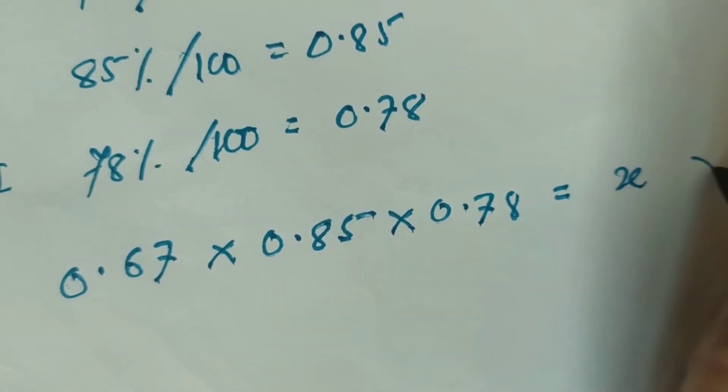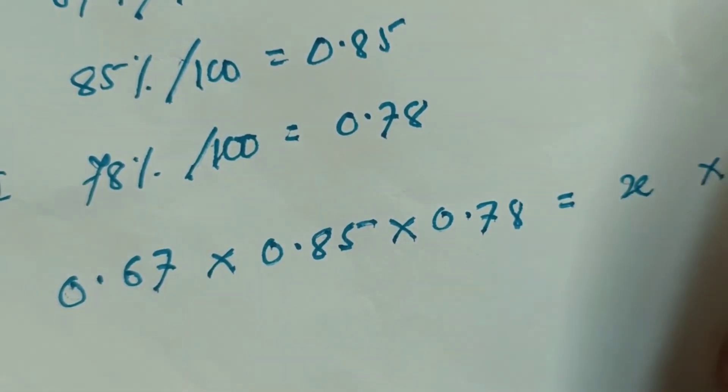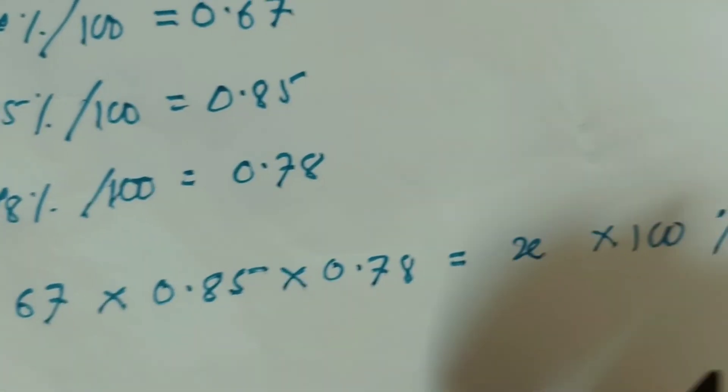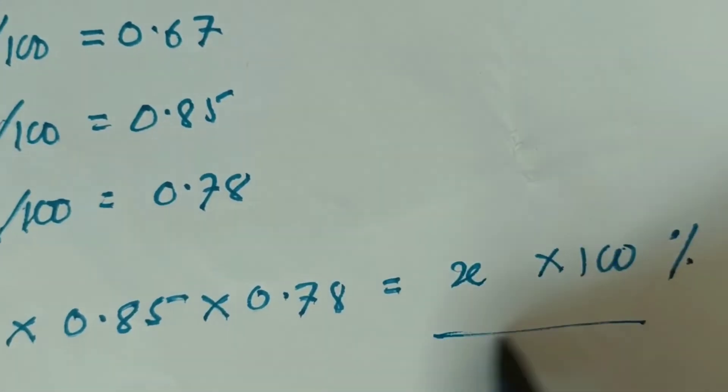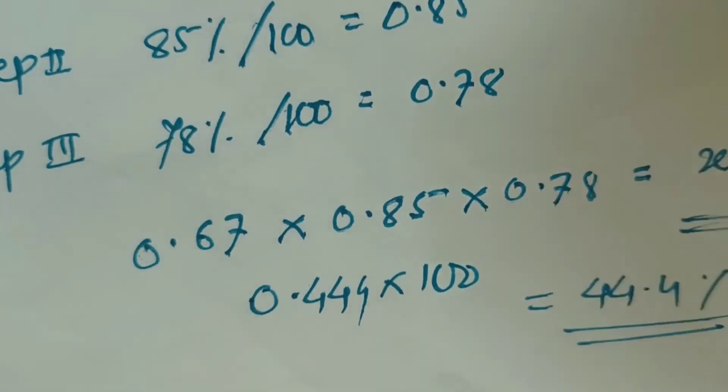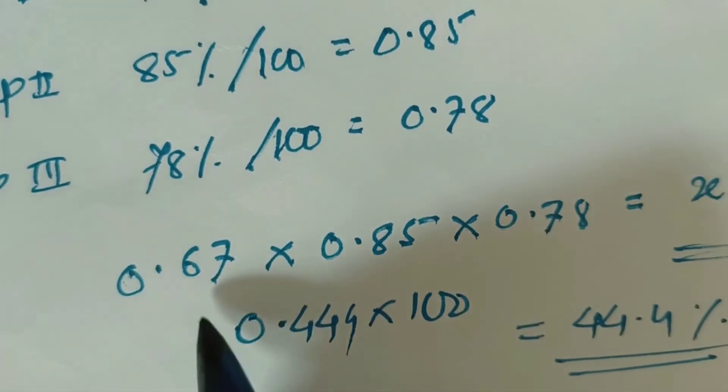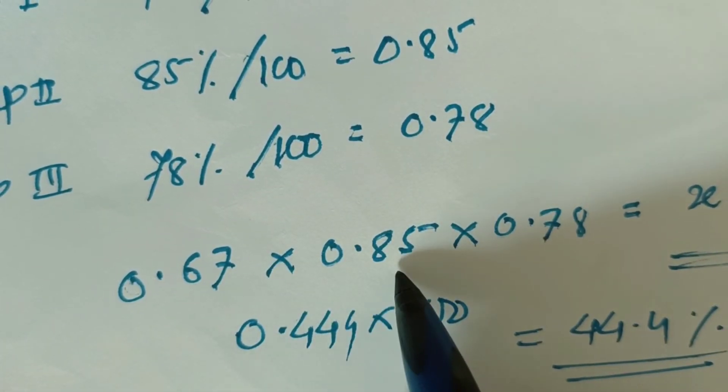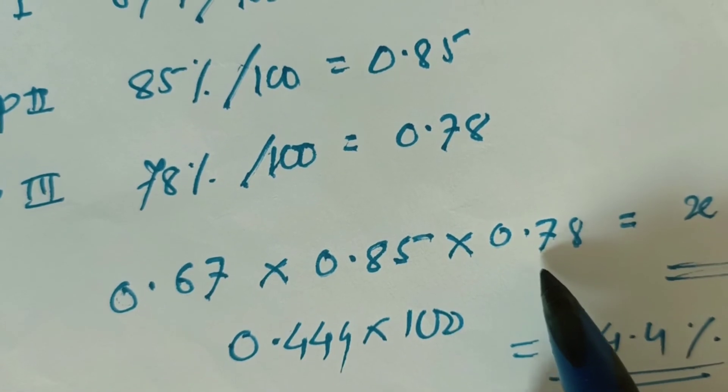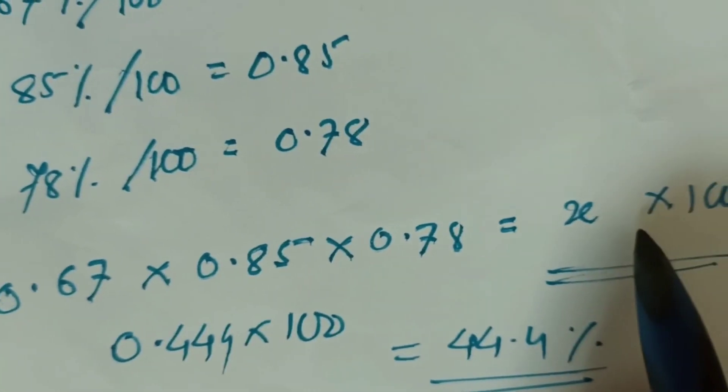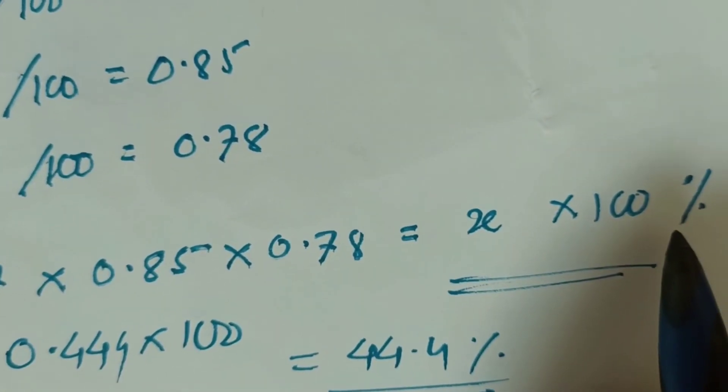In the last step, 0.67 into 0.85 into 0.78, and that should be multiplied with 100. That will be your overall percent yield.